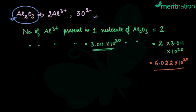What is asked to us is just Al³⁺. So number of Al³⁺ present in just one molecule is how much? Two. Right, so two ions of Al³⁺ are present in one molecule.